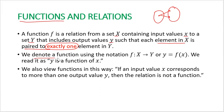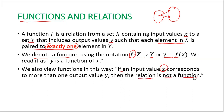We denote a function using the notation f from set x to set y, or it can be written as y equals f of x, which we read as 'y is a function of x.' We can also view functions this way: if an input value x corresponds to more than one output value y, then the relation is not a function. We want to avoid having an element x paired to two or more values in set y.